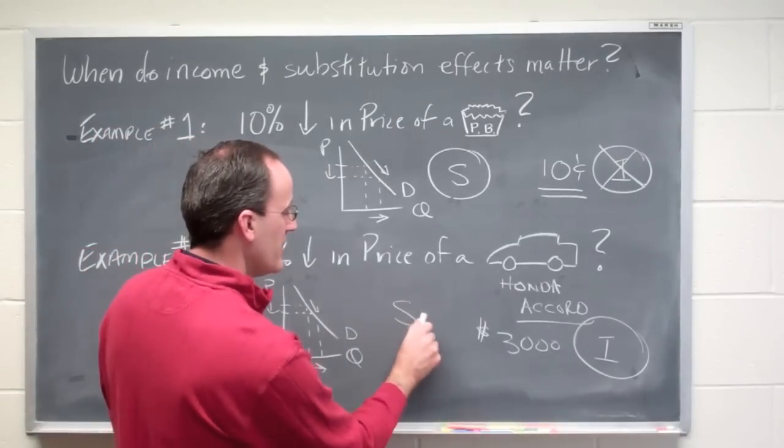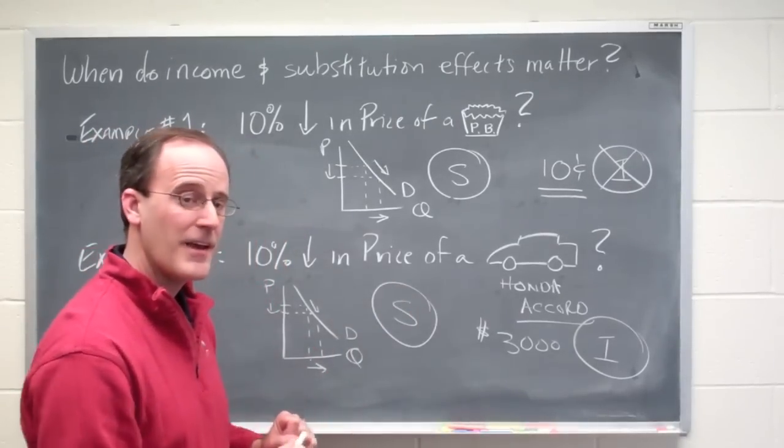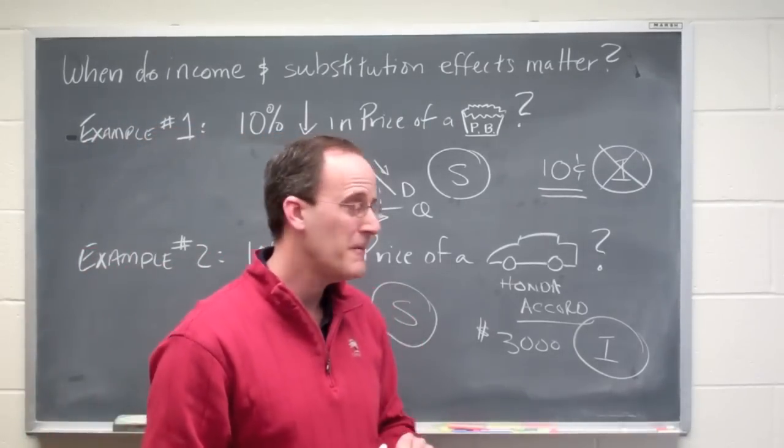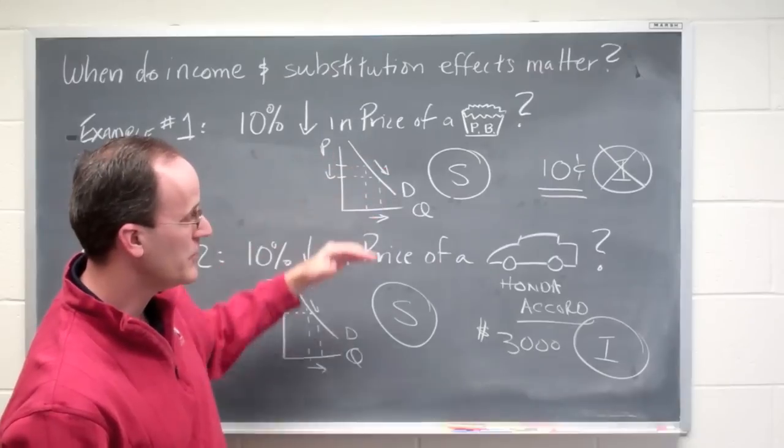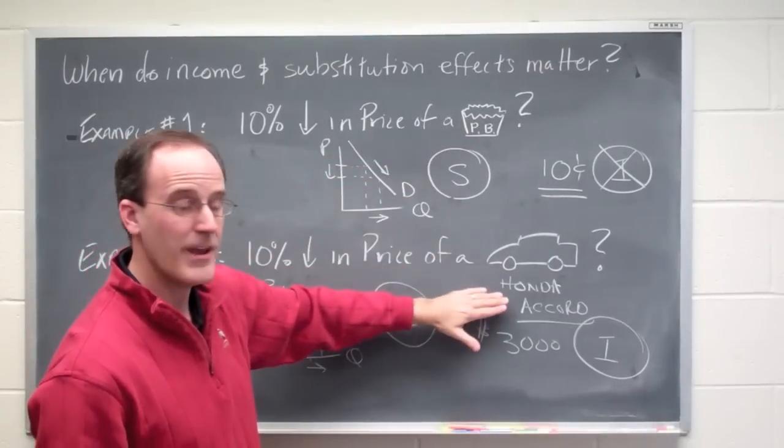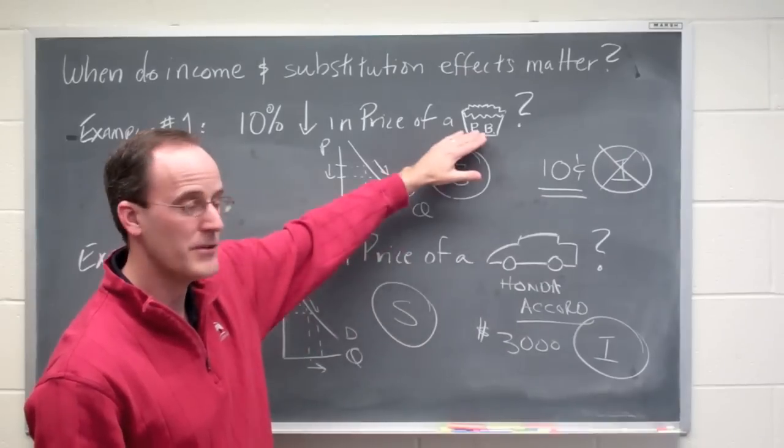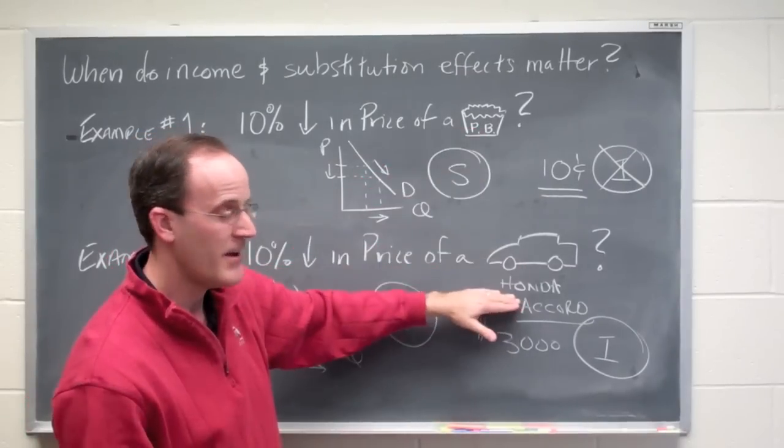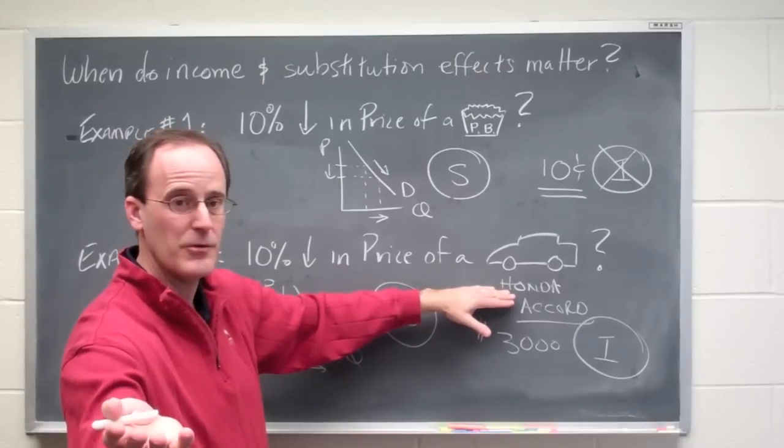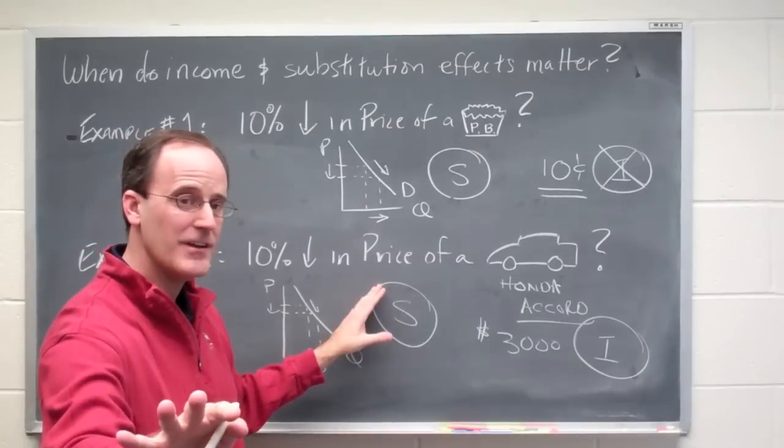The substitution effect still matters. And that's the point I wanted to get to here. There's a substitution effect in both cases. There's a drop in the price which causes people to buy more peanut butter cups and buy more Honda Accords. But the moment people buy more peanut butter cups, they buy fewer other chocolate bars, and they buy fewer of the other vehicles to compete with a Honda Accord. So we have a substitution effect in each case. It always matters. There's always a substitution effect.